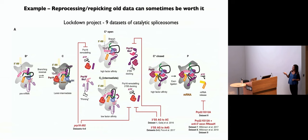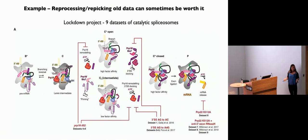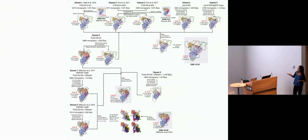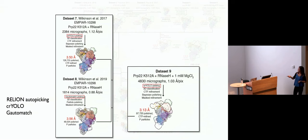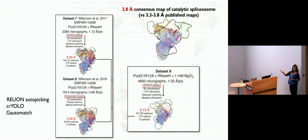Let me show an example of when improved picking can be worth it. In 2020, when we had to stay home, everyone started reprocessing old data. This is a very nice example by Max Wilkinson. He took nine datasets of spliceosomes, most of them published from the Nagai lab. Some of those published structures were at 3.8 angstrom and the best at 3.3 angstrom. What he did was re-pick most of these datasets, either by RELION auto-picking, CrYOLO, or chi-automatch — using a whole range of picking to get the best out of these datasets. This resulted in much better structures from reprocessing of the old data.